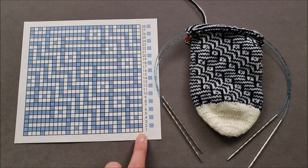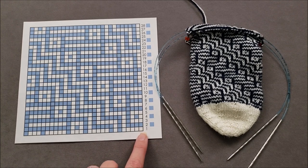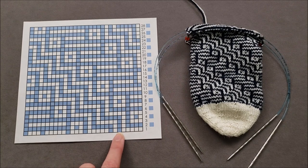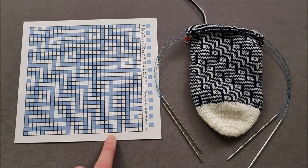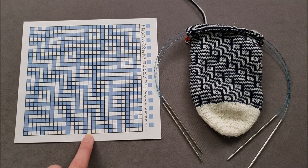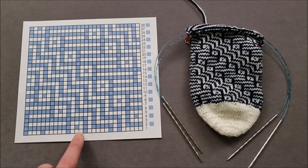You could easily think that for round one here, you would knit five stitches in white and then knit one stitch in blue, knit one stitch in white, knit one stitch in blue, knit five stitches in white, knit one stitch in blue, and so on.